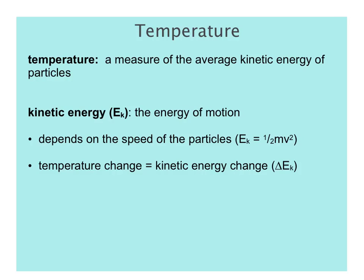There is an actual equation for kinetic energy. M is for mass and V is for velocity, which is roughly speed. We won't be working with this equation — it's here for informational purposes only. Any time you have a temperature change, this means you're going to have a change in kinetic energy, abbreviated delta E sub K.